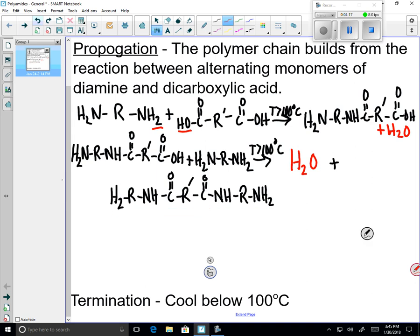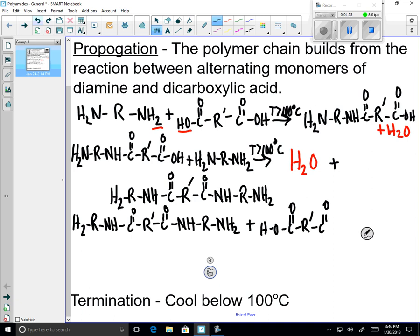Our product out of step two becomes our reactant into our third and final propagational step. The last piece to join was an amine piece, so we have to add a piece of the other functional group, the dicarboxylic acid. HO, C double bond O, R prime, C double bond O, OH produces if the temperature is greater than 100 degrees C.